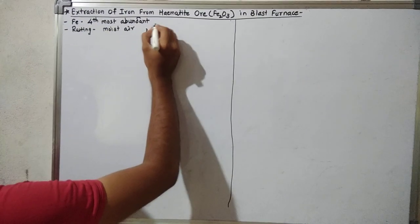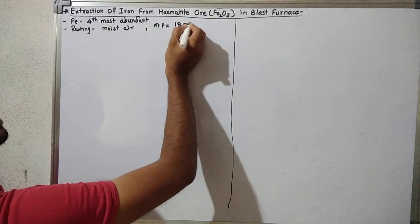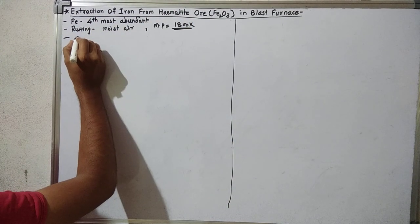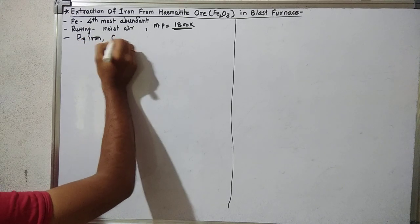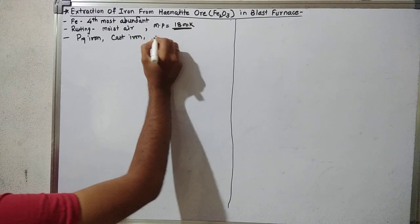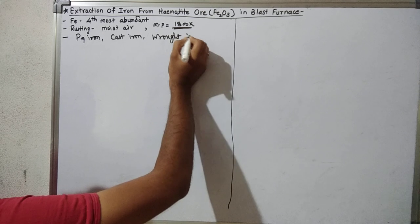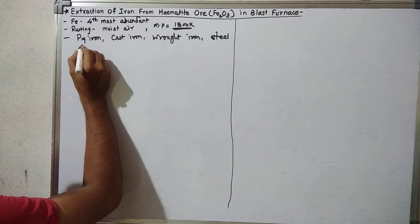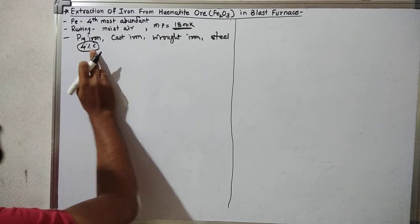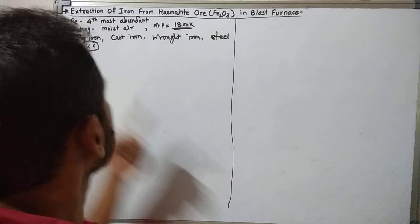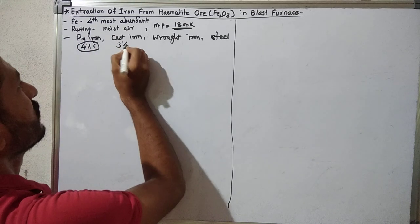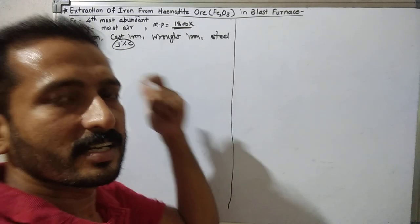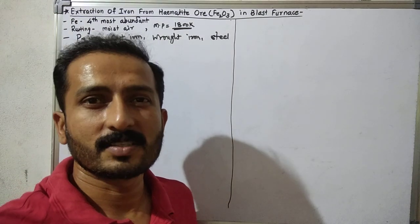Iron is found in different forms: pig iron and cast iron. Pig iron generally contains four to five percent carbon. This is impure, hard, and brittle. Cast iron also has near about three percent carbon. Both pig iron and cast iron are similar, both hard and brittle. Generally, such cast iron is used in automobile parts like brake liners.